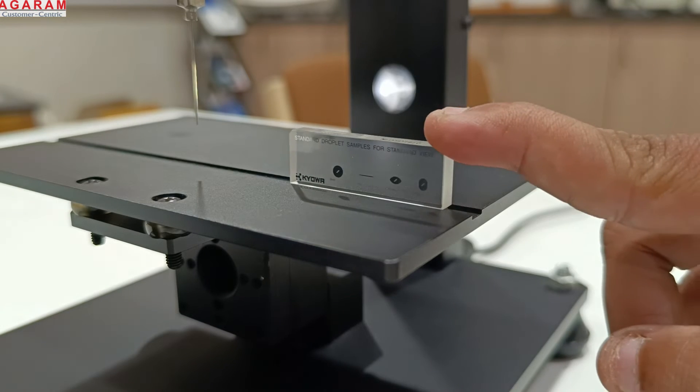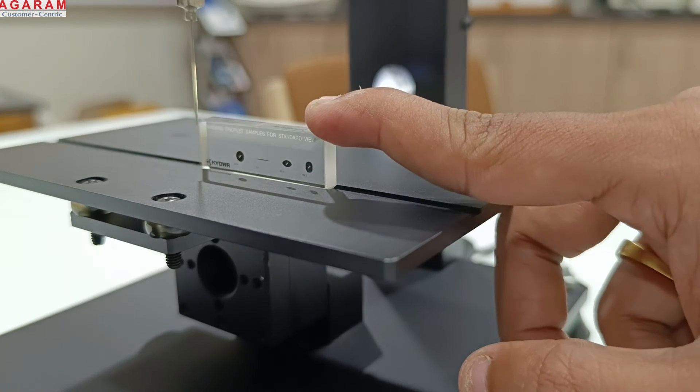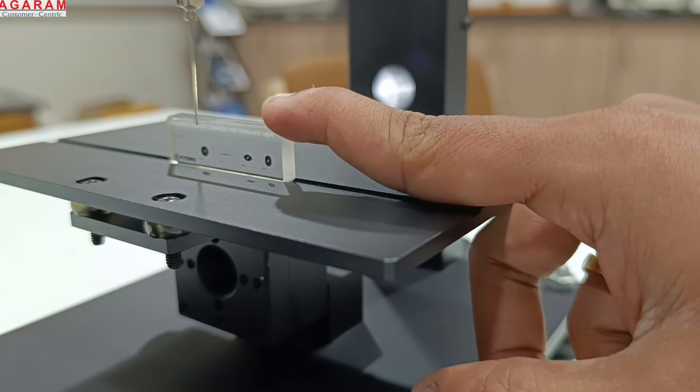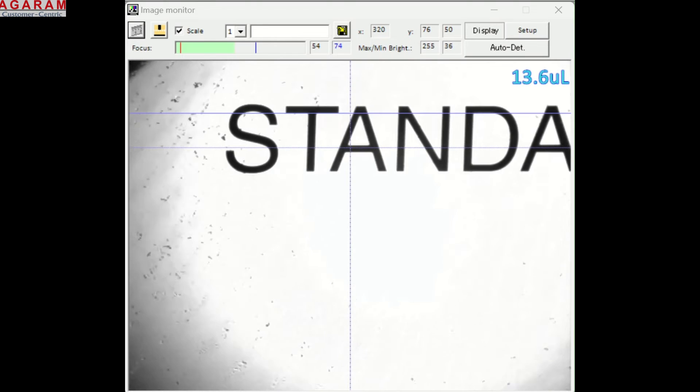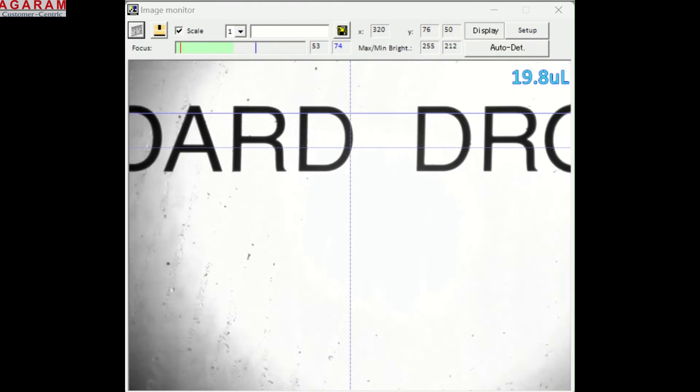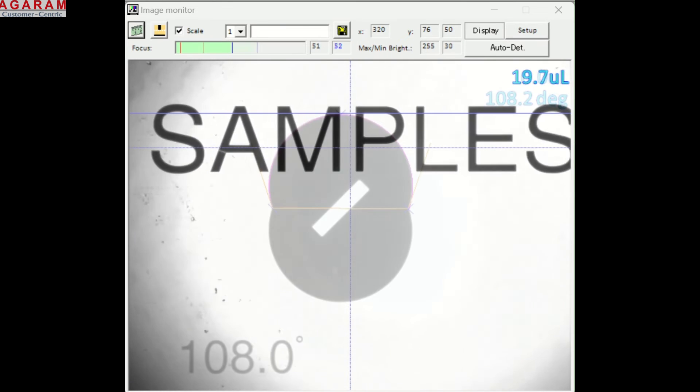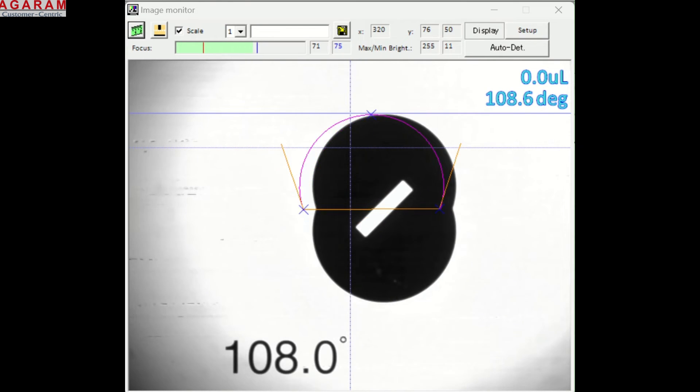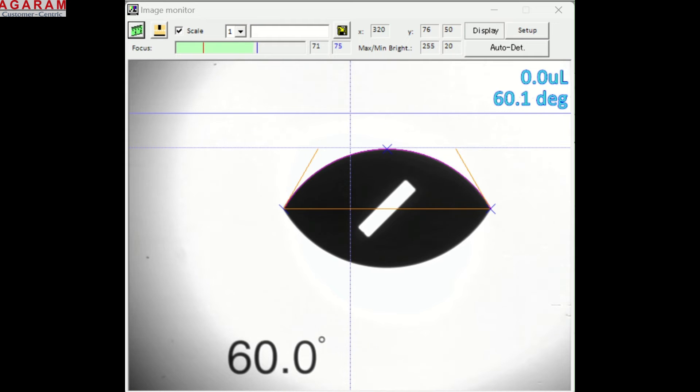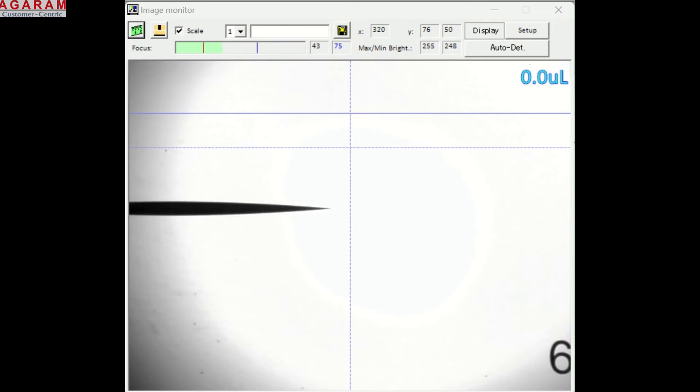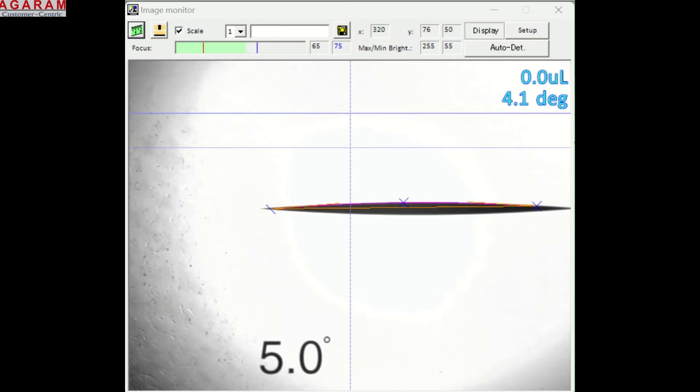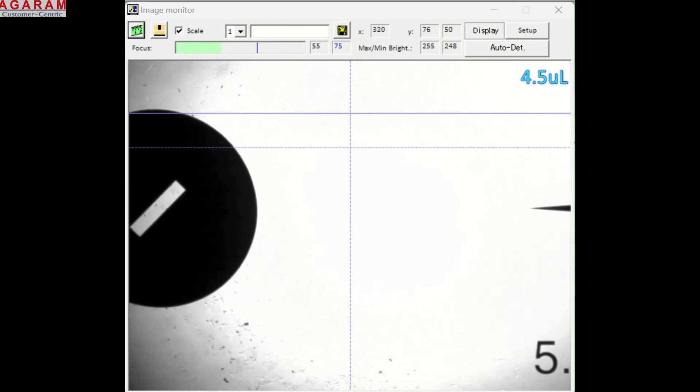With every contact angle meter, we offer a standard droplet sample. It has three droplet shapes engraved inside. These are factory calibrated and certified. Periodic inspection with these helps in ensuring the proper functioning of the machine. The pixel calibration dot helps maintain accuracy and longevity of the camera.